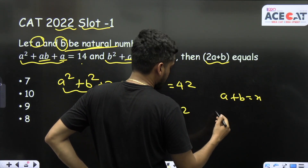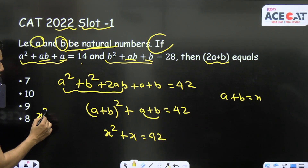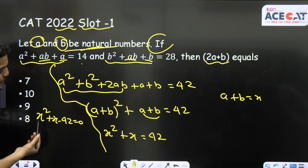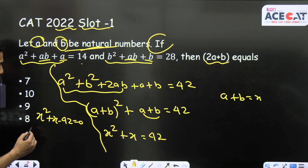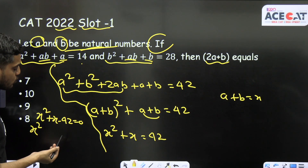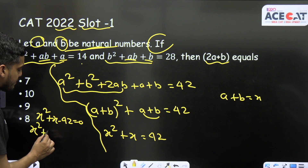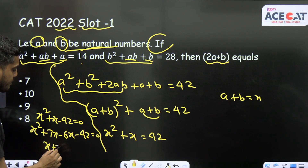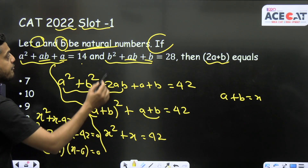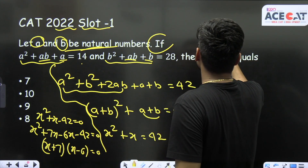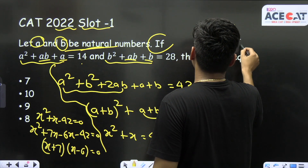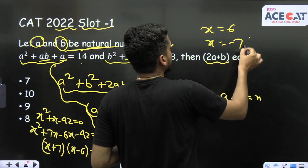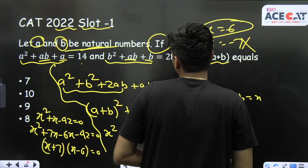Now we solve the quadratic equation x² + x = 42, which gives x² + x − 42 = 0. The factors of −42 whose difference is +1 are +7 and −6, so we get (x + 7)(x − 6) = 0. Two values: x = 6 or x = −7. Since a and b are natural numbers, their sum cannot be negative, so x = −7 is eliminated and only x = 6 is taken.